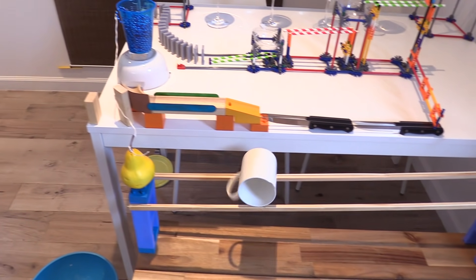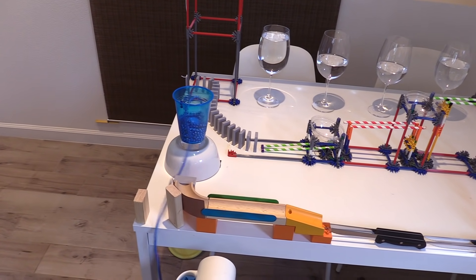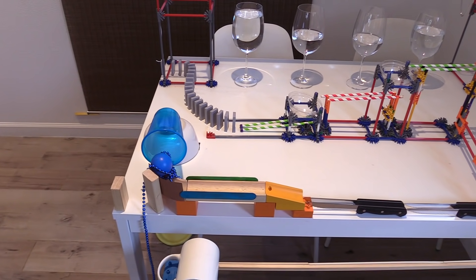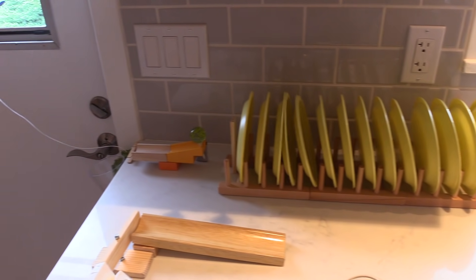Take 3 actually made it all the way to step 22 on the second kitchen table, but the beads got stuck coming out of the cup. Take 4 didn't get quite as far and ended with step 19, the grape swing.